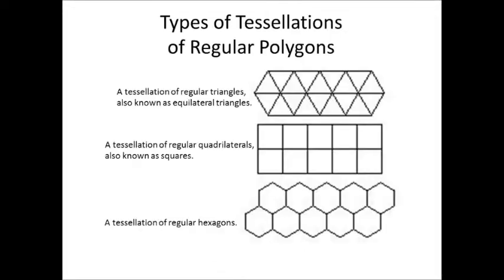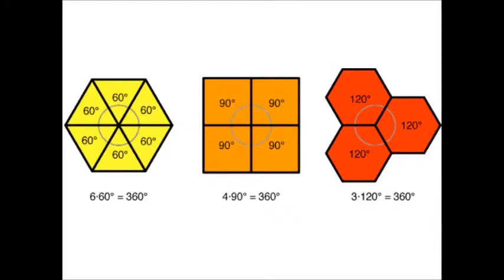Why is this? Why can't one tessellate a regular pentagon or a septagon? Well, it works out like this. The interior angle measures of the three regular polygons that do tessellate are 60, 90, and 120 degrees, for the regular triangle, quadrilateral, and hexagon, respectively.